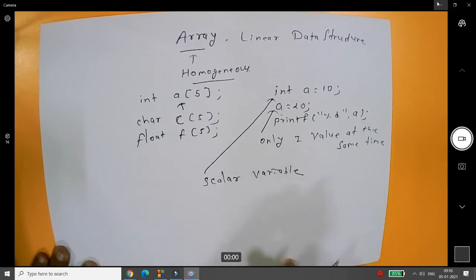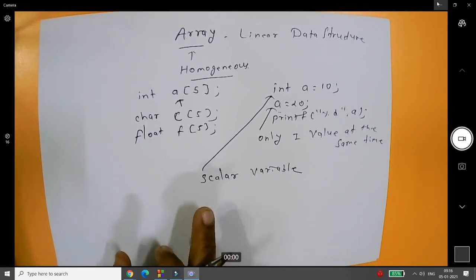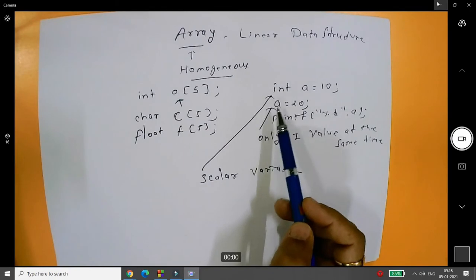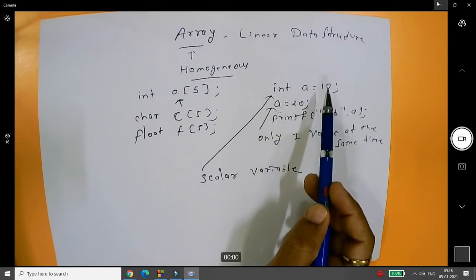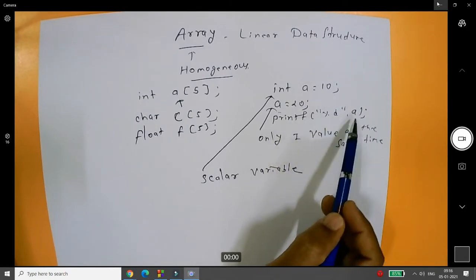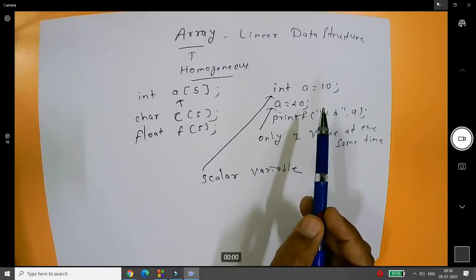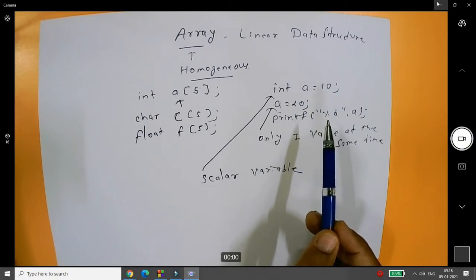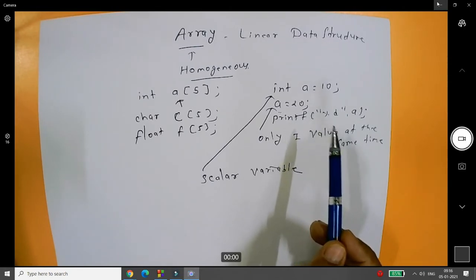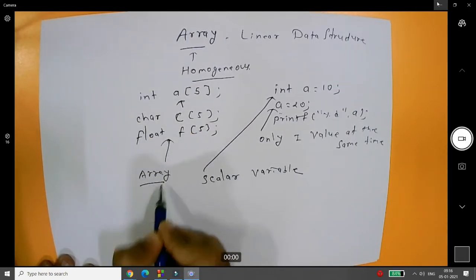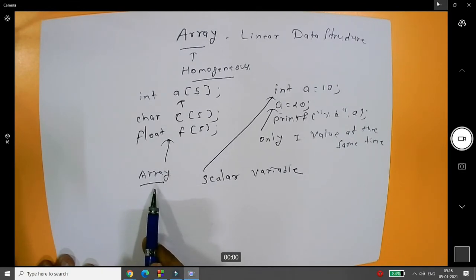A scalar variable is a normal, regular variable which can store only one value at the same time. If you write a equals 10 and then a equals 20, your 10 will be replaced with 20. Whenever you print, you will get 20 only — your 10 will be lost. But if you don't want to lose previous values and want to store each and every value, then you can go for an array.